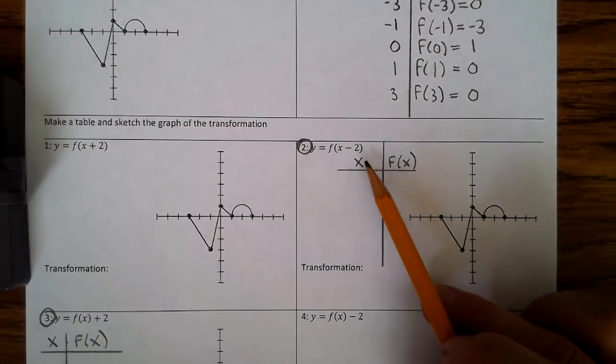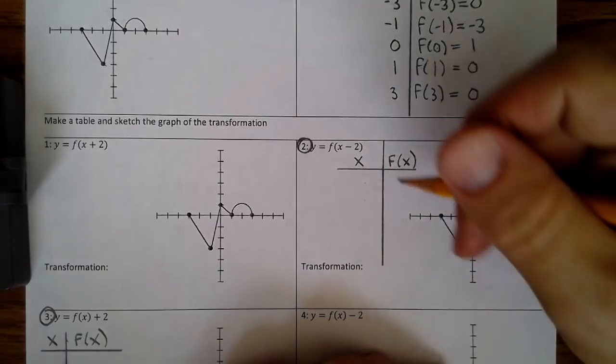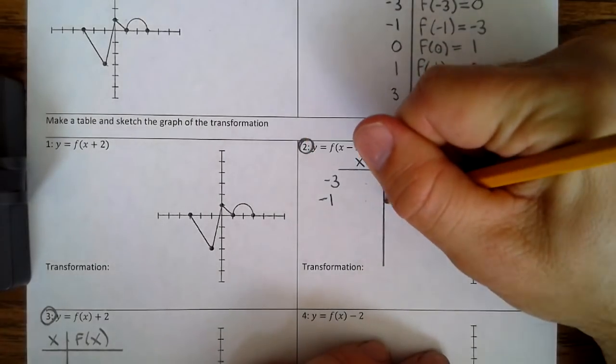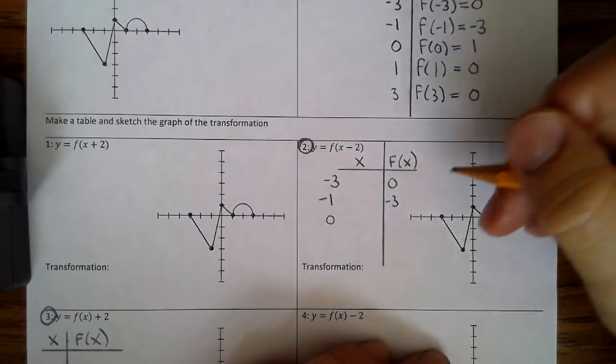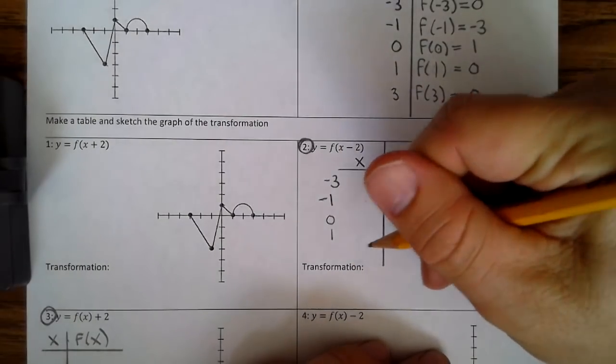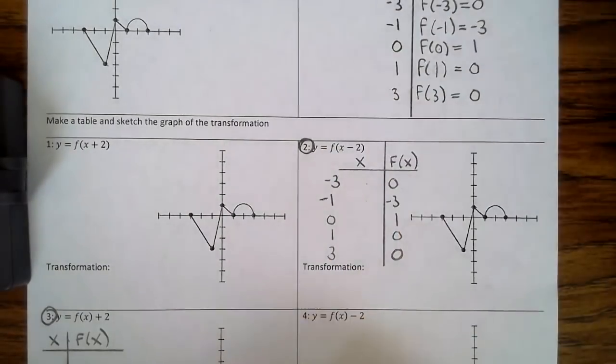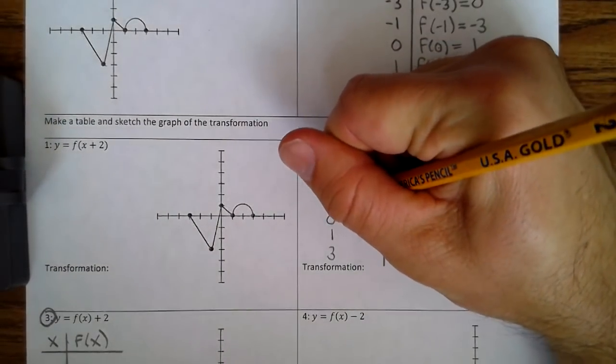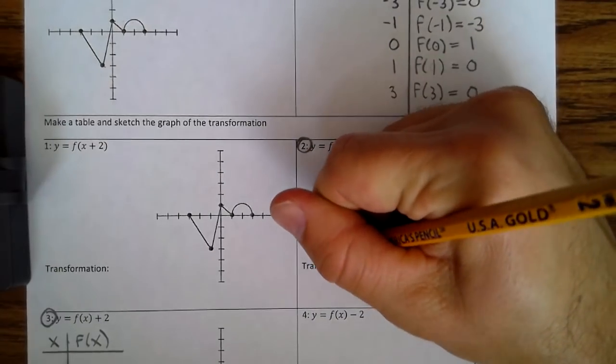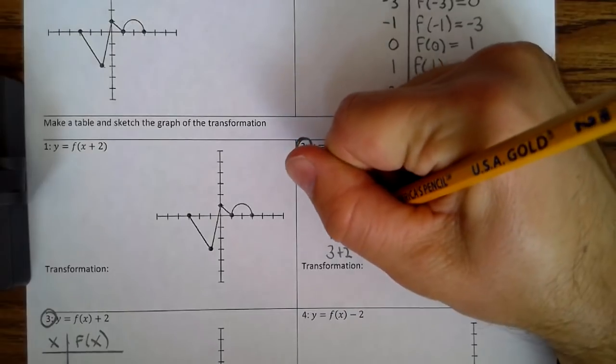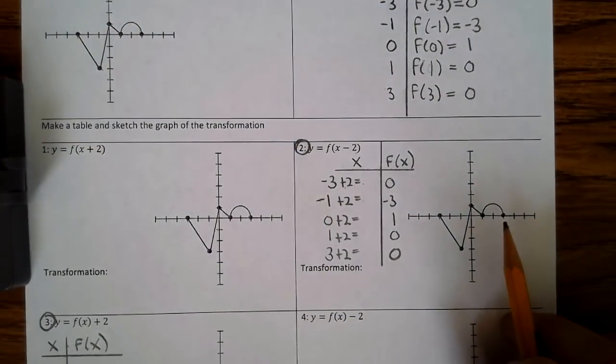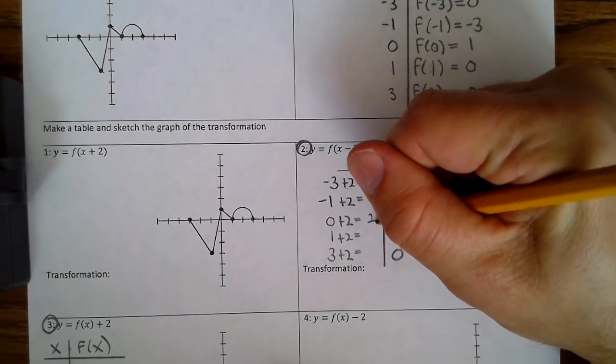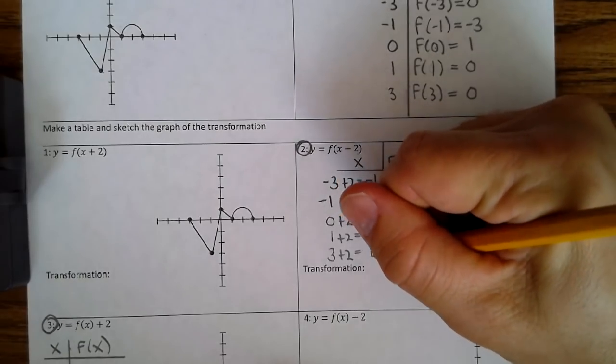So since we're going right, that affects the x value, not the f(x) value. So we have negative 3, 0, negative 1, negative 3, 0, 1, 1, 0, and 3, 0. Since we know we're going right 2 units, we're going to add 2 to each of the x values. So negative 3 plus 2 is negative 1. Negative 1 plus 2 is 1. 0 plus 2 is 2. 1 plus 2 is 3. 3 plus 2 is 5.